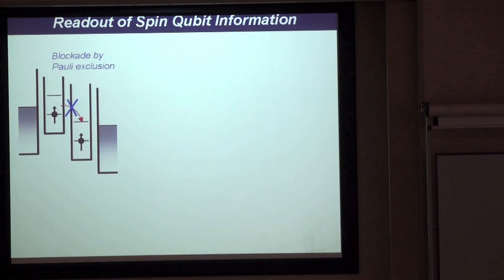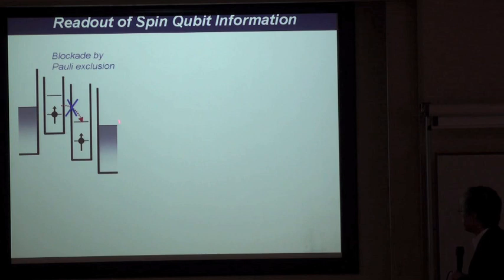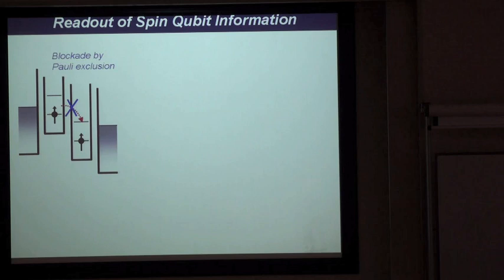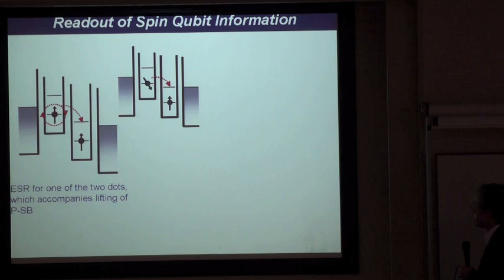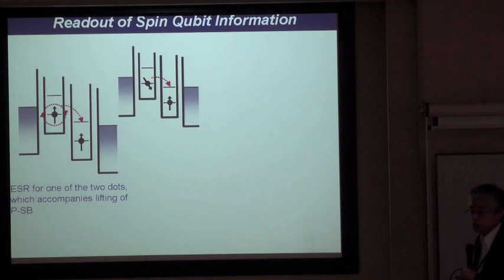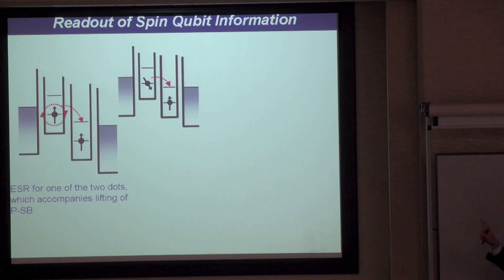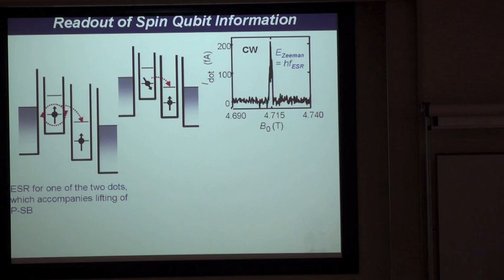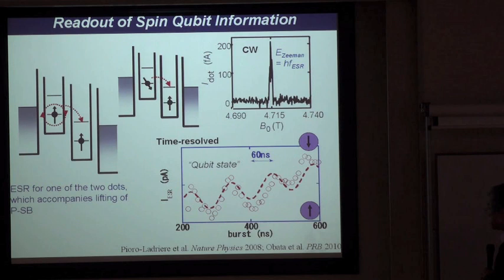Starting from the Pauli spin blockade condition, we try to perform a spin rotation in one of the two spins. The fraction rotated due to the electron spin resonance effect can move from left to right because the spin blockade is partially lifted. This move causes a change in charge state from one-one to zero-two, which is detected. After pump-and-probe measurements, we obtain Rabi oscillations showing the spin flip between spin-down and spin-up states.